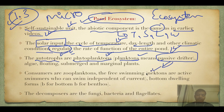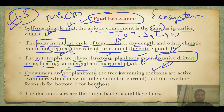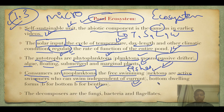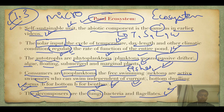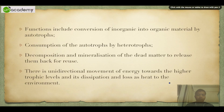The autotrophs in a pond ecosystem are phytoplanktons — planktons are passive drifters — along with algae and floating, submerged, and marginal plants. Please note the terms planktons, nektons, and benthos — they'll come in handy. Consumers are zooplanktons, also passive drifters. Free-swimming animals like fishes fall under the category of nektons — active swimmers who can swim with, against, or neutral to the current. Bottom-dwelling forms are called benthos — B for bottom, B for benthos. Decomposers are fungi, bacteria, and flagellates.